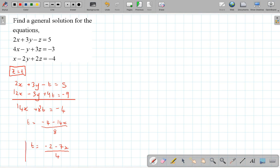that's minus 2 minus 7x all divided by 4. And that's now my second solution. So I've got t equals z and t equals this in terms of x. Now I'm just going to do exactly the same thing with line two and line three, but I'm going to eliminate the x's.